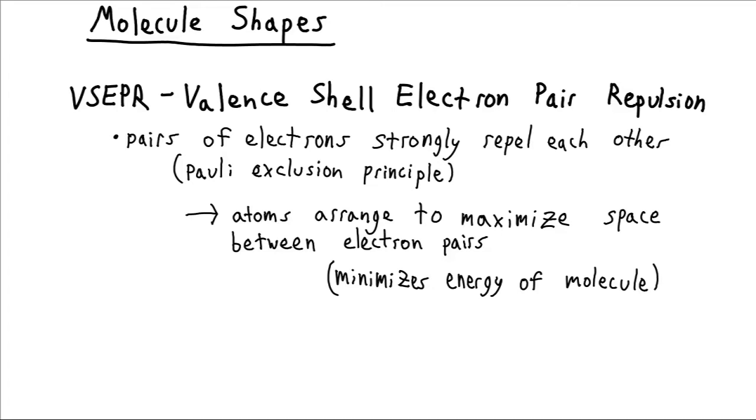So what will happen is that these electron pairs will try to orient themselves to provide the most room, and the atoms consequently will also be arranged in a way that helps to maximize the space between those electron pairs. So if we can just figure out how to space out those electron pairs, we can figure out what our molecules are going to look like.